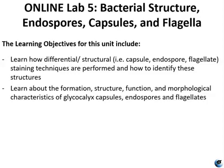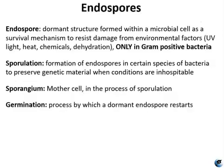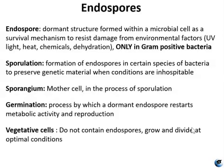An endospore is a dormant form of a bacterium that allows for it to survive in poor environmental conditions. Spores are resistant to heat and chemicals because they have a tough cortex layer with an outer covering made of the protein keratin. Sporulation is the name of the process in which endospores are formed.